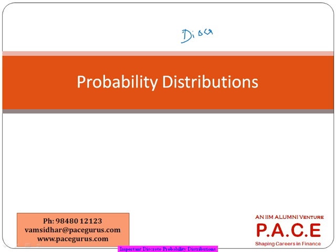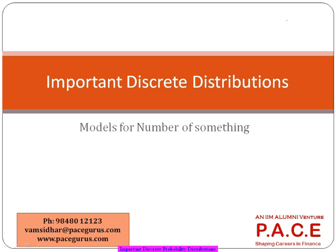So anything where I want to model something related to the discrete items. What are these discrete items? Countable kind of items. Number of claims, number of successes, number of something. Whenever we are trying to model number of something, we are talking about discrete probability distribution.